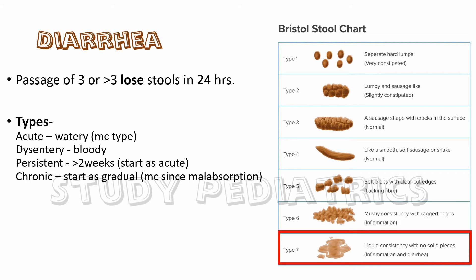Coming to the types of diarrhea: acute diarrhea, that is watery diarrhea, which is the most common type; dysentery, which is the bloody type of diarrhea; and persistent diarrhea, which starts as acute but continues for more than two weeks.